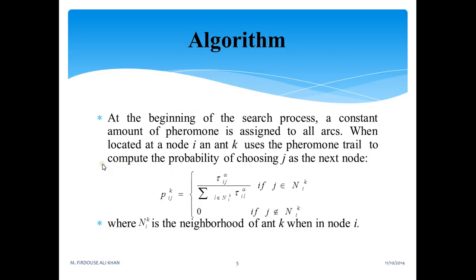Now this is the algorithm. At the beginning of the search process, a constant amount of pheromone trail, that is a chemical substance, is assigned to all arcs. When located at a node i, ant k uses the pheromone trail to compute the probability of choosing j as the next node. This is what the equation says, where N^i_k is the neighborhood of ant k when in node i.